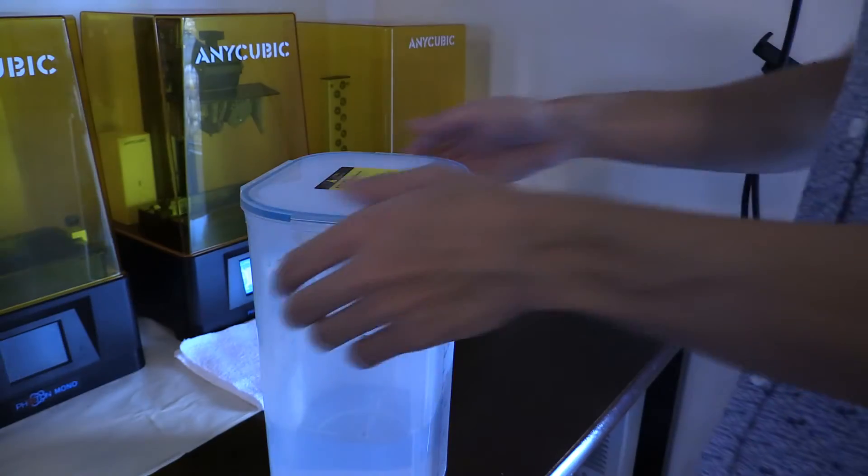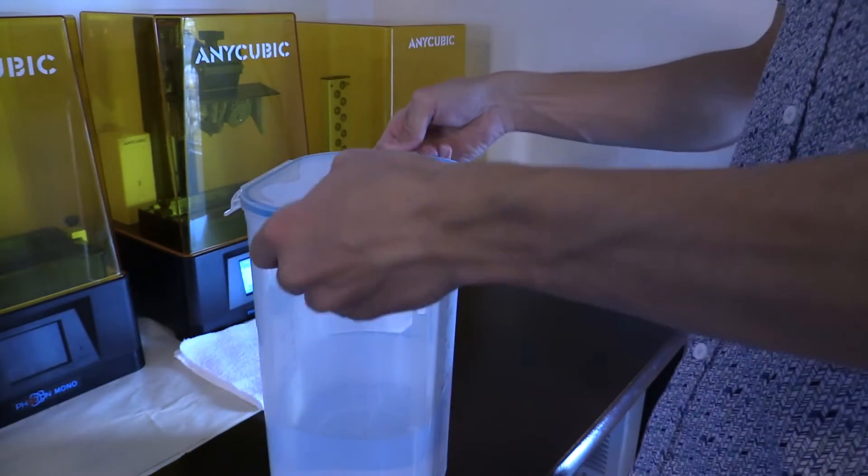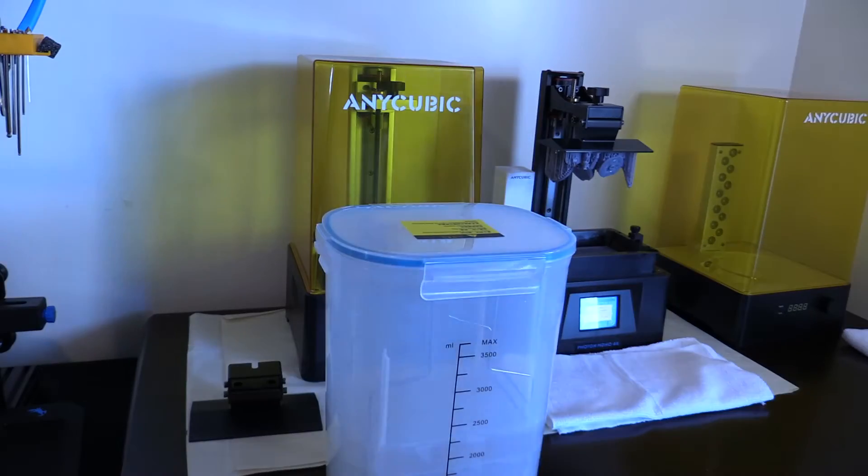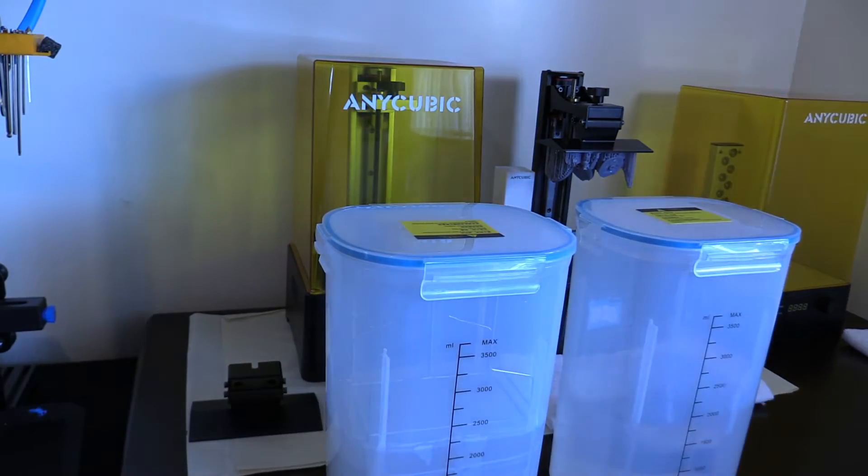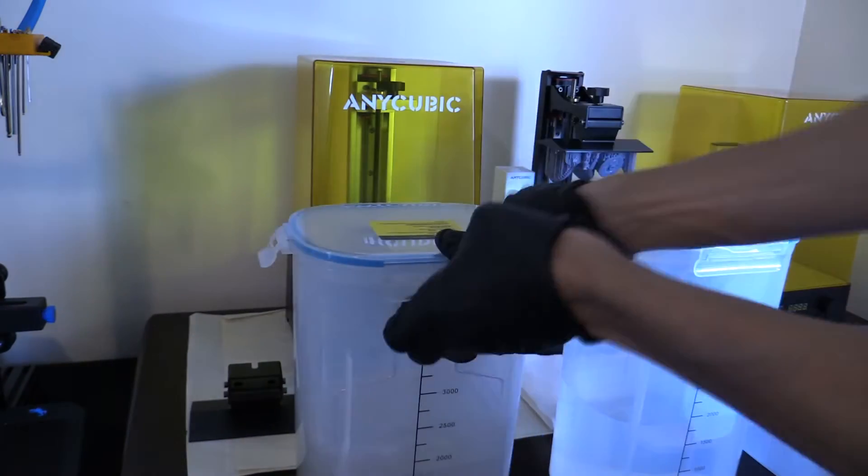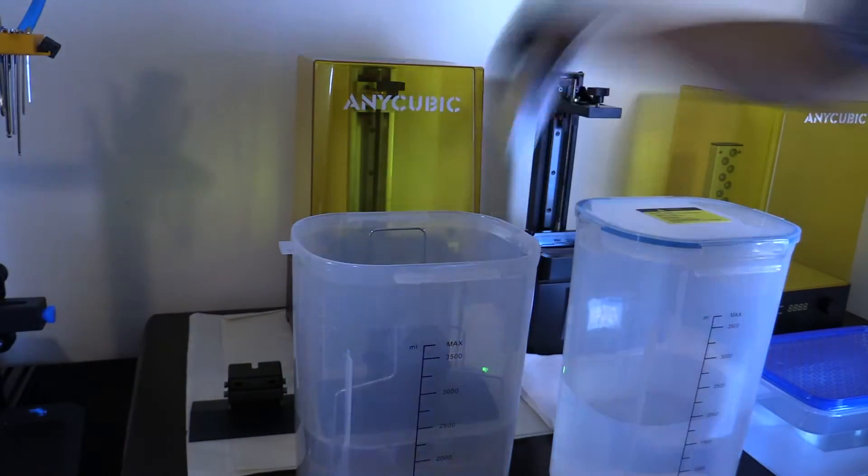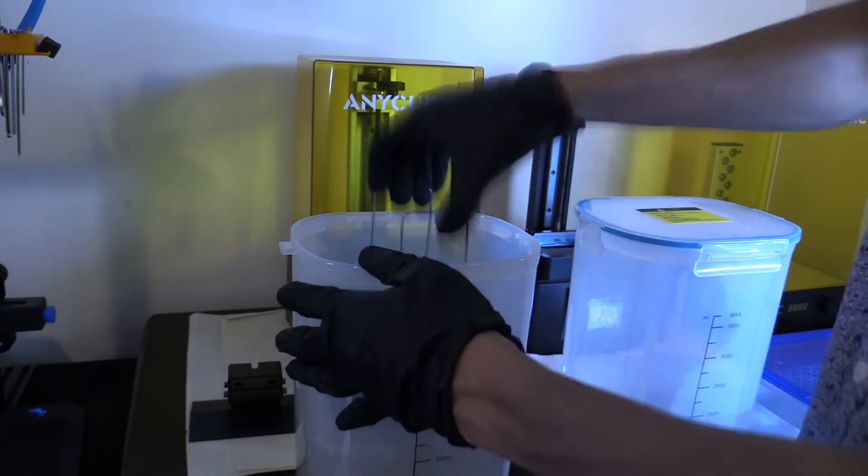Now, let's talk about working with isopropyl alcohol, or IPA. Once a print is done, it's cured and safe to touch, isn't it? Well, not quite. It's still coated in uncured resin, so we use IPA to give it a good wash. I made a video showing my process for washing prints, so if you want to check that out, it'll come up as a recommendation at the end of this video.